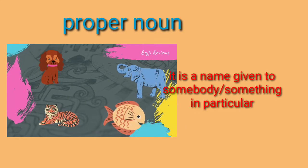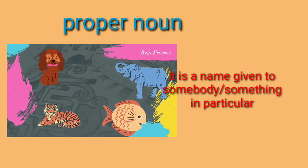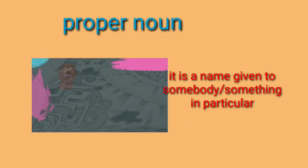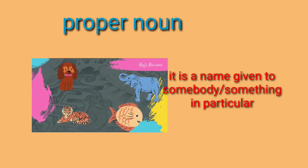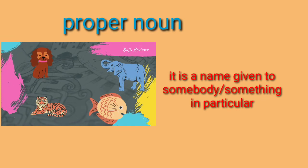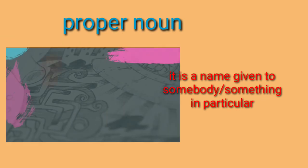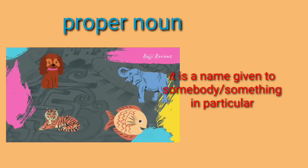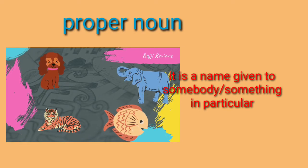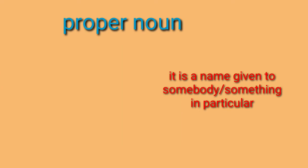The first one is proper noun. A proper noun is a name given to somebody or something in particular. For example, suppose 'elephant' — when we use it as a particular name, it is said to be a proper noun.